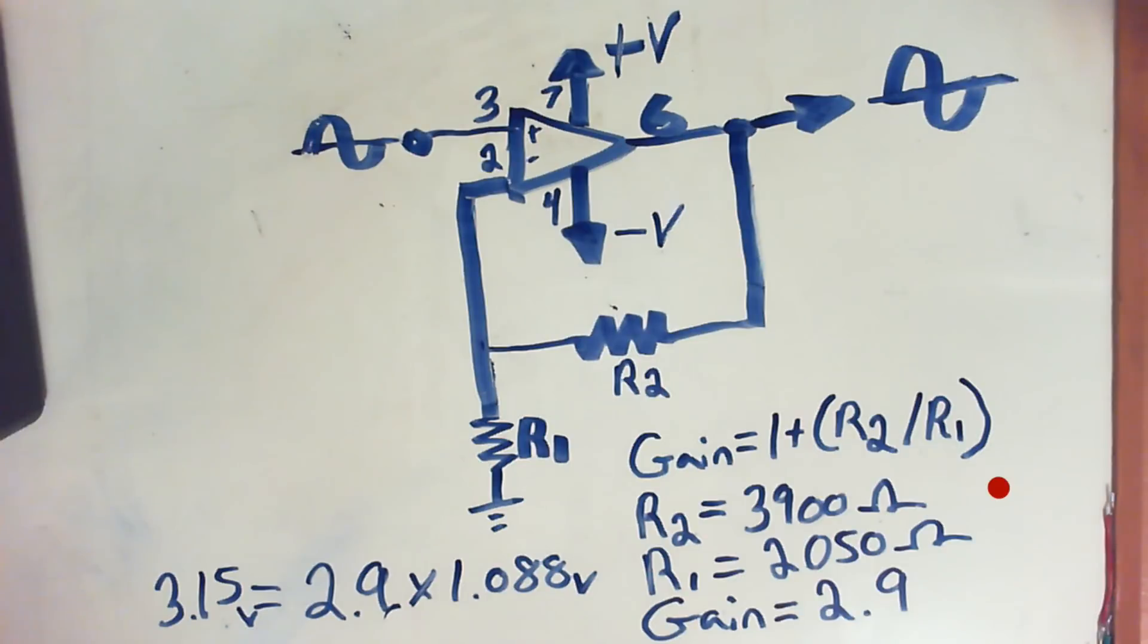Alright, so with this circuit that I'm going to show you in a second, I have a 3900 ohm resistor for R2 and a 2050 ohm resistor for R1. I did the math and my gain is going to be 2.9.